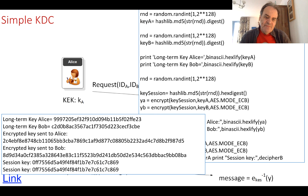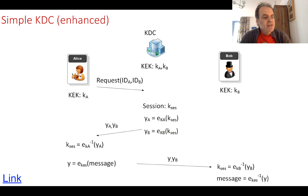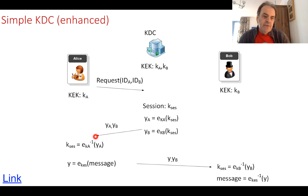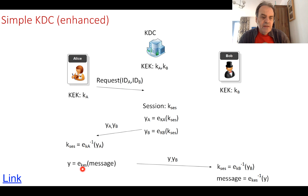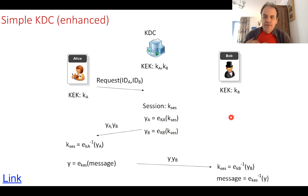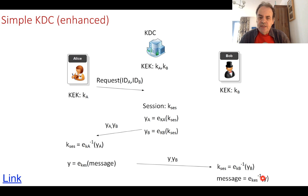We can enhance this similarly to what we saw with the safe deposit box — we can send both the YA and YB values back. Alice will be able to decrypt to find the session key and then encrypt a message to Bob. Bob receives both YA and YB. He uses the YB value to decrypt and find the session key, then decrypts the ciphertext with the session key to find the message.